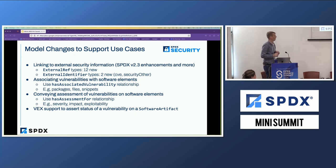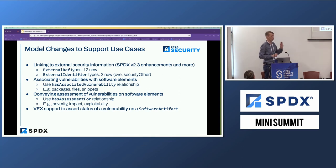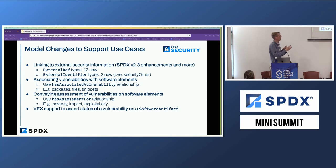We have new external identifiers. We now have support for CVEs, and the other one is 'security other.' So you can now say this is a CVE ID. And 'security other' is for things like GitHub, which has its own types of IDs for security vulnerabilities. We also now have the ability to associate a vulnerability with a package.